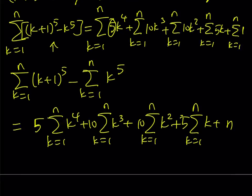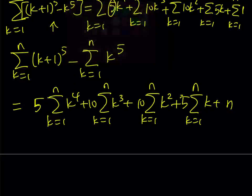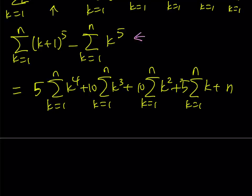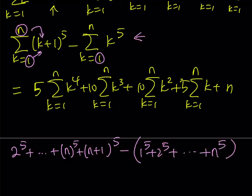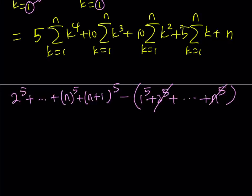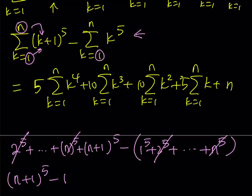Now, what happens on the left-hand side is that it can be simplified. When I expand the sigma of k plus 1 to the fifth minus k to the fifth, starting with k equals 1 gives 2 to the 5th power, and continuing all the way up to n gives n plus 1 to the 5th power. The right side goes from 1 to the 5th through n to the 5th. A lot of terms cancel out — from 2 to the 5th through n to the 5th — and the left-hand side basically gives me n plus 1 to the 5th power minus 1, since 1 to the 5th power is 1.